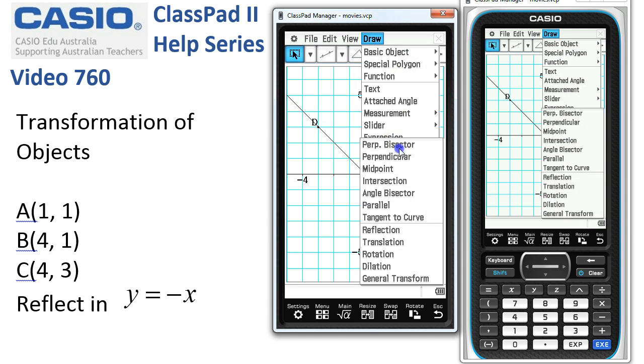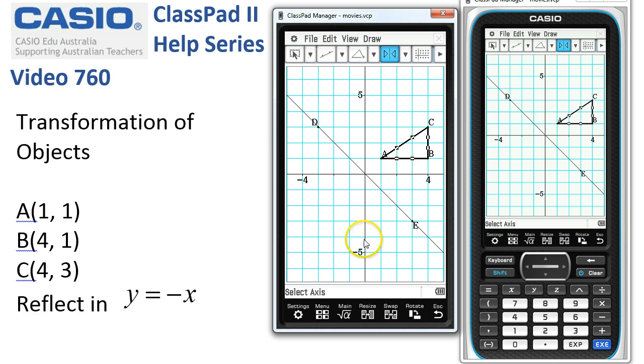We tap onto Draw, Construct, Reflect. ClassPad, you can see a little hint at the bottom of the screen here. Select the axis. It doesn't say of reflection, but that's what it means. If I now tap once onto our infinite line segment and release,